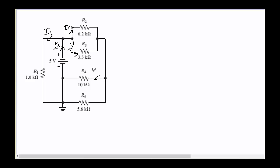Then at this node, I2 and I3 are adding up and splitting again into I4 and I5. This point and this point are the same single point, so I2 and I3 are added here to leave as I4 and I5. Then I4 and I5 add up with I1 and give us back I total. This completes the first part: determining the nodes and assuming the currents in the branches.